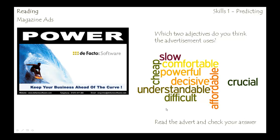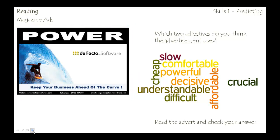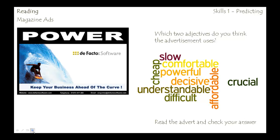Let's begin by looking at this advertisement — Power. This is an advertisement by the company DeFacto, and they produce software. Look at the picture, look at the title, and then look at the words on the right of your screen and try to guess which two adjectives you think this advertisement uses. Just write down the two adjectives that you think the advertisement uses.